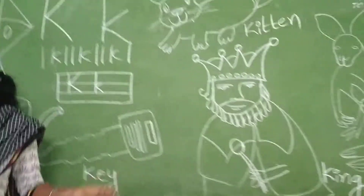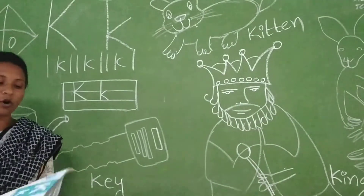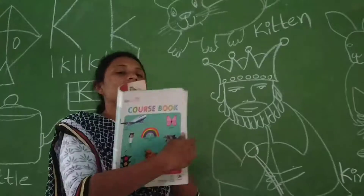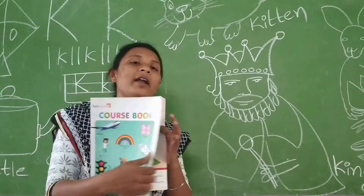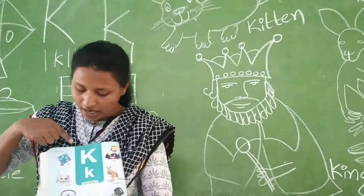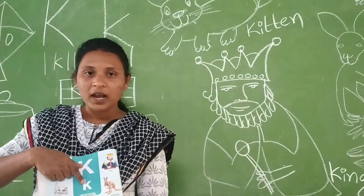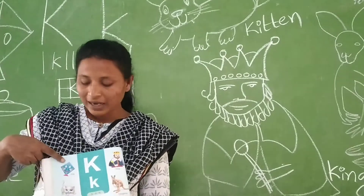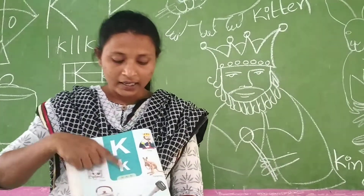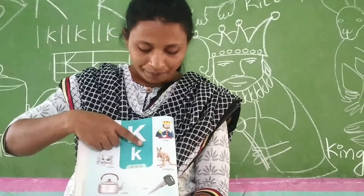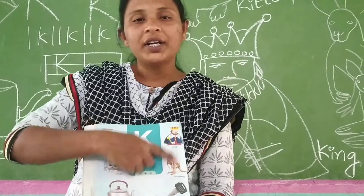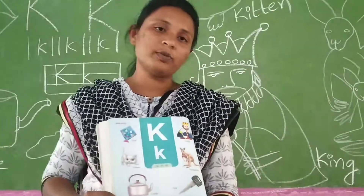So children, now open your practice course book, open page number 14. This is your course book, children. Open page number 14 — you can see the letter words. This is capital K and small K. K for Kite, K for Kitten, K for Key, K for Kangaroo, K for King. Read the letter words in your course book, children.